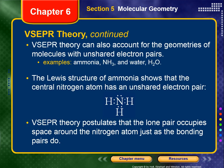VSEPR theory can also account for geometries of molecules with unshared electron pairs — those lone pairs of electrons — with examples being ammonia (NH3) or water (H2O). The Lewis structure for ammonia shows the central nitrogen atom has one unshared electron pair on top, not involved in bonding. VSEPR theory postulates that the lone pair occupies space — the electrons have very little mass but quite a bit of charge — so they repel the electrons forming the bonds between the nitrogen and the hydrogens, just as much as any other electrons.